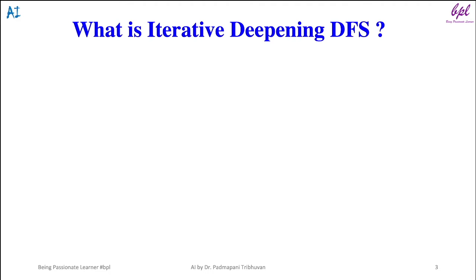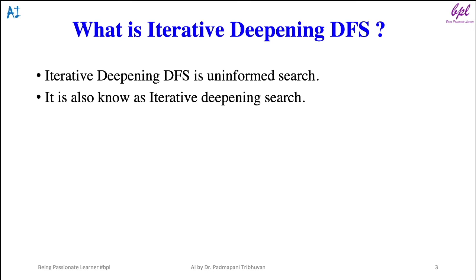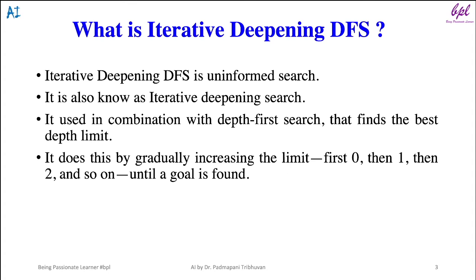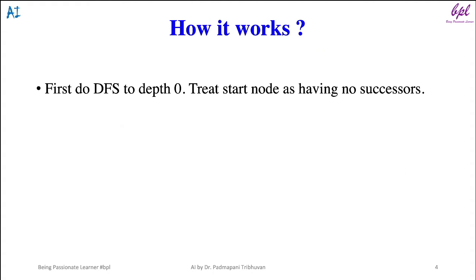Iterative Deepening Depth First Search is an uninformed search algorithm, also known as Iterative Deepening Search. It is used in combination with depth first search that finds the best depth limit. It does this by gradually increasing the limit — first starting with zero, then one, then two, and so on until a goal is found. In general, iterative deepening is a preferred uninformed search method when the search space is very large and the depth of the solution is not known.